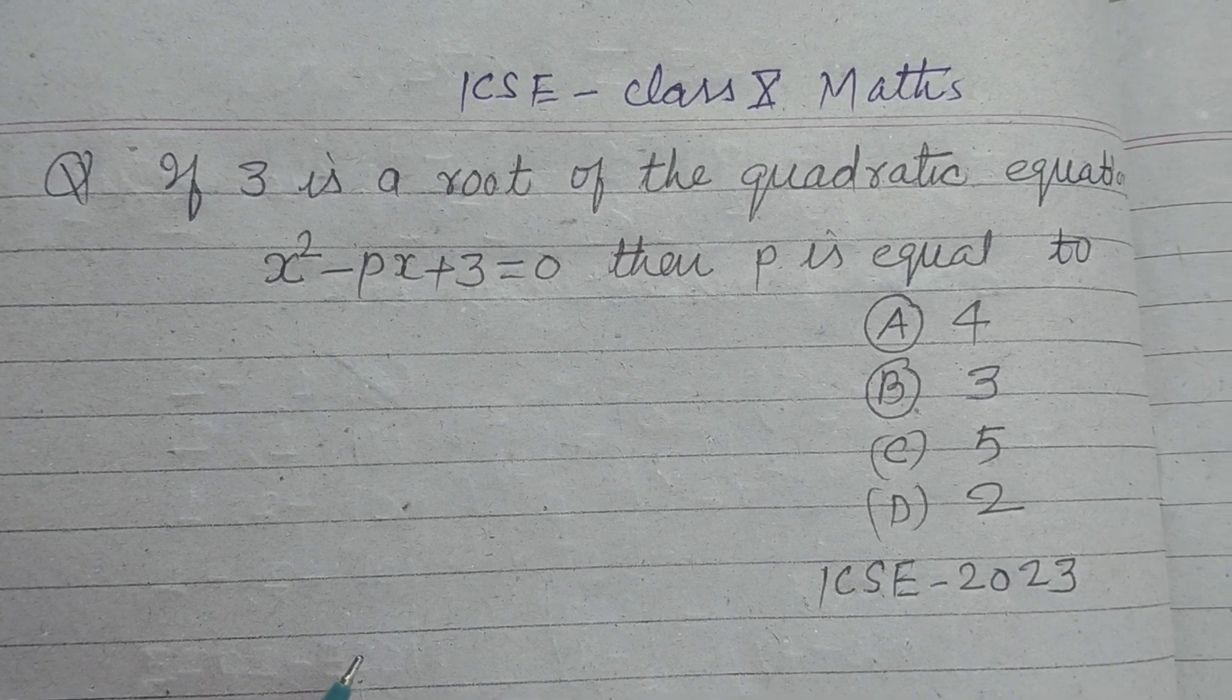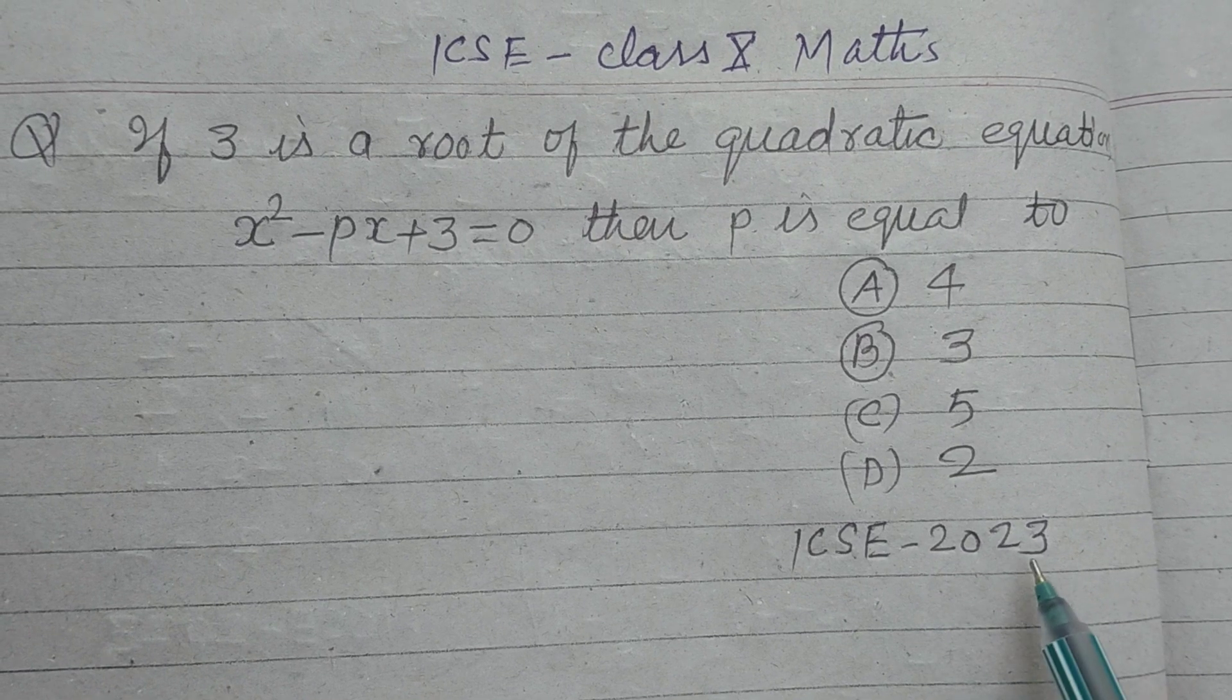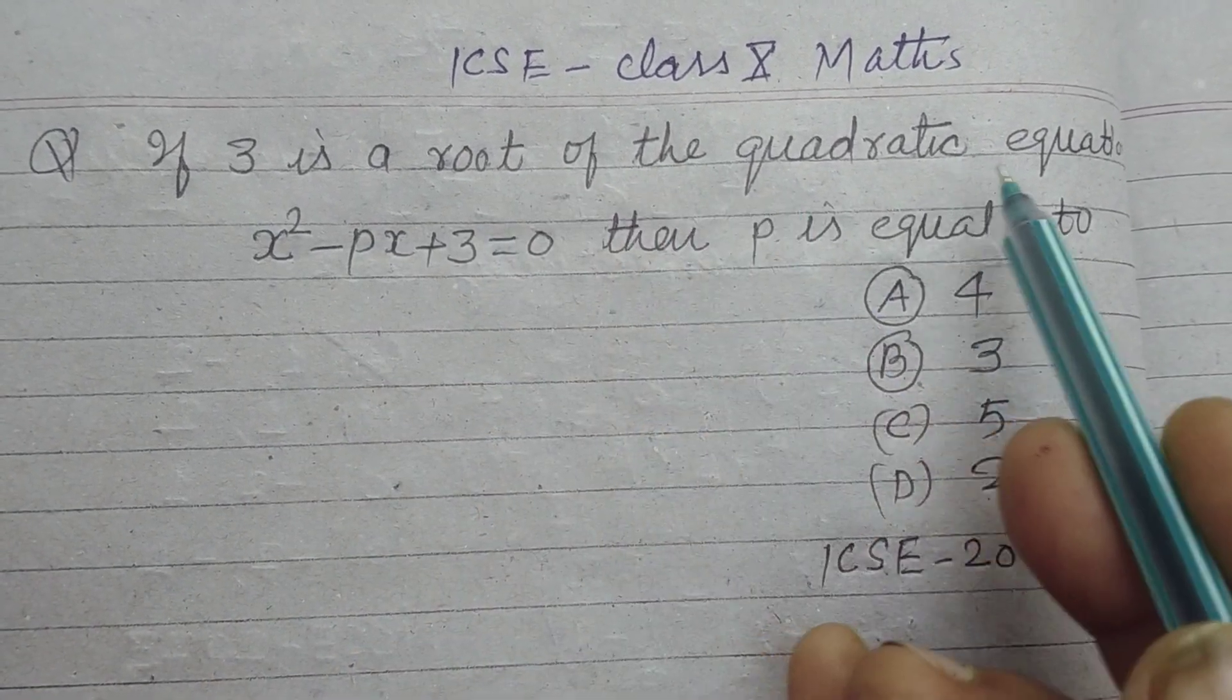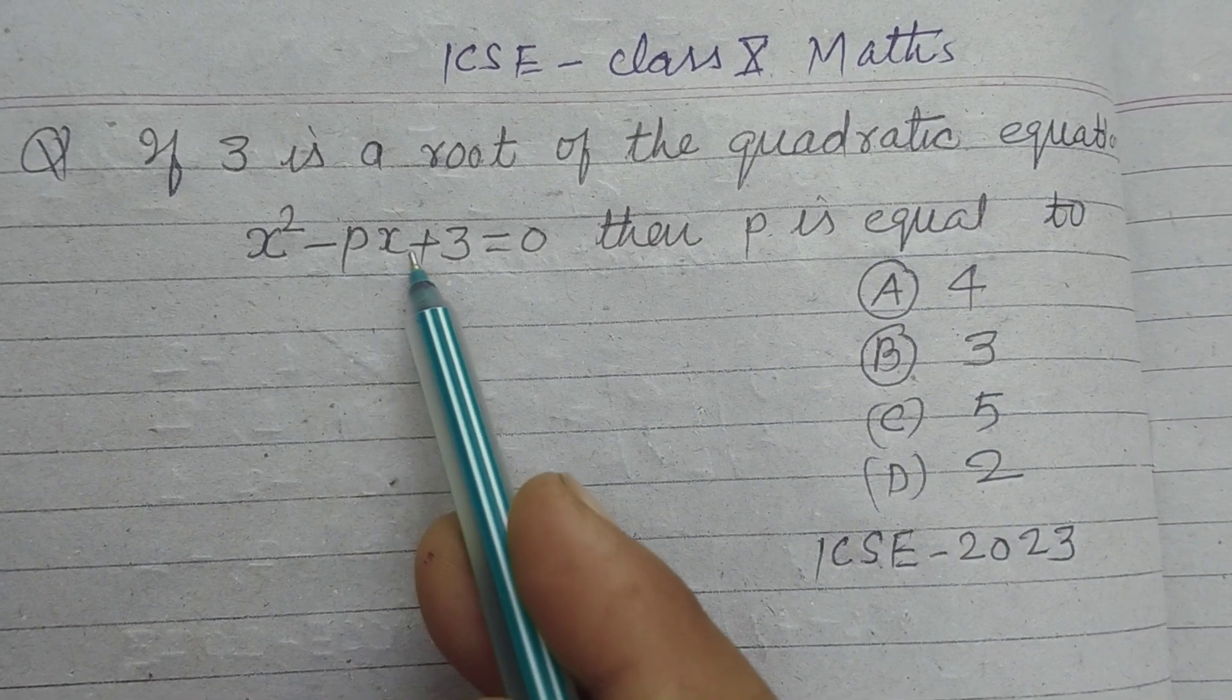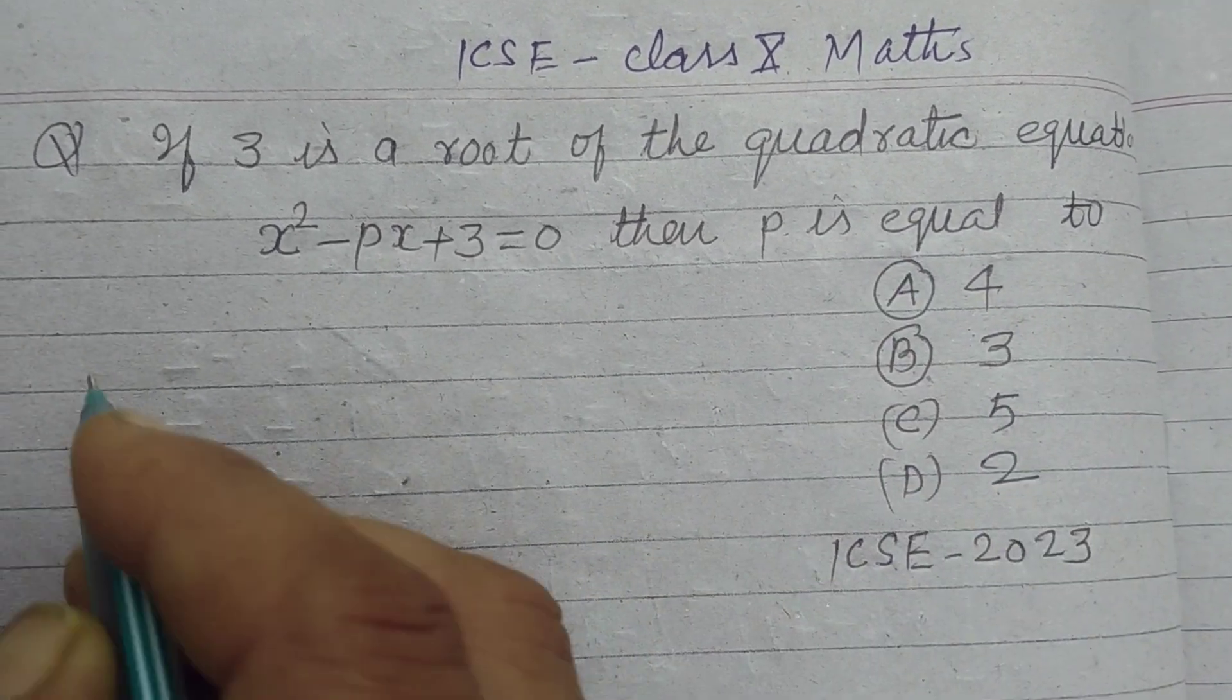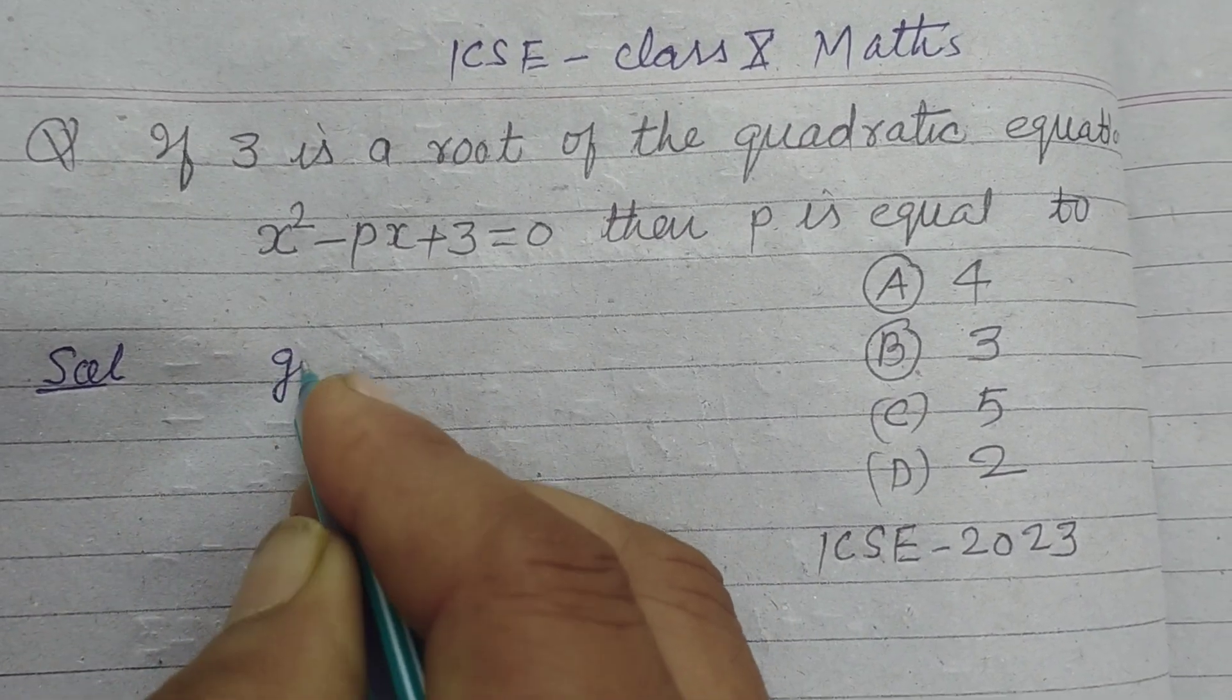Hello students, welcome to this YouTube channel. Question from ICSE class 10 2023 board exam: If 3 is a root of the quadratic equation x squared minus px plus 3 equal to 0, then p is equal to? So students, the given quadratic equation is